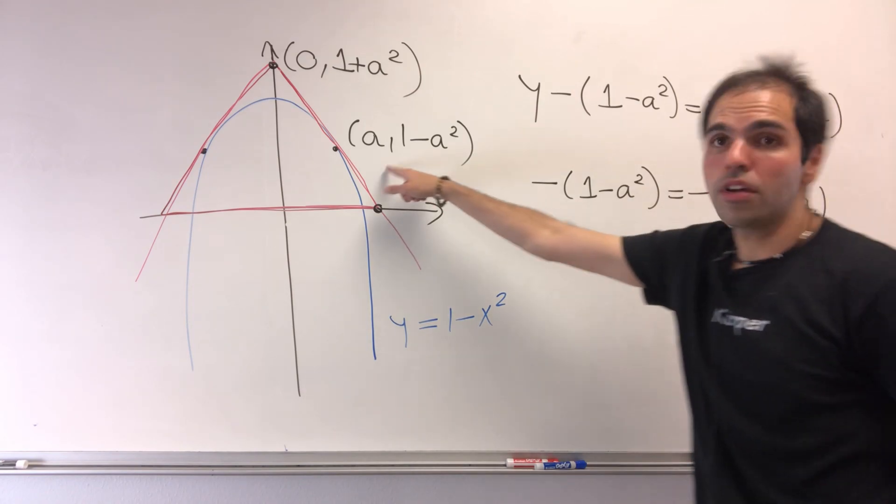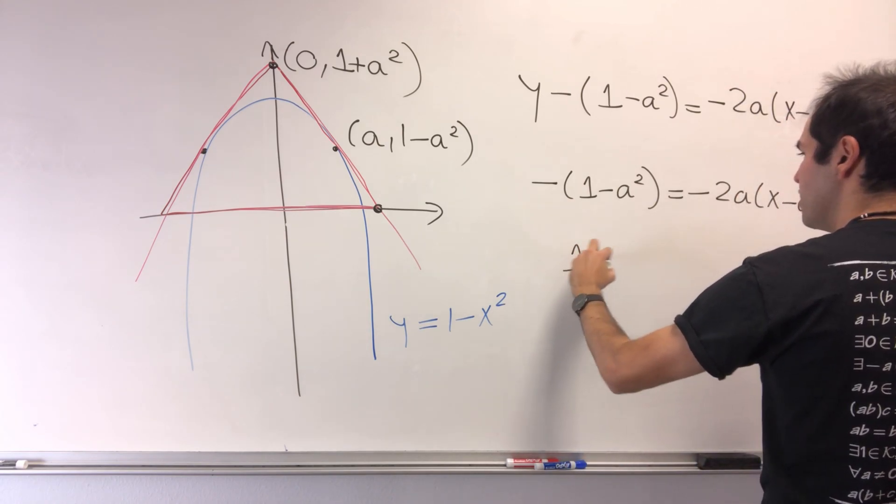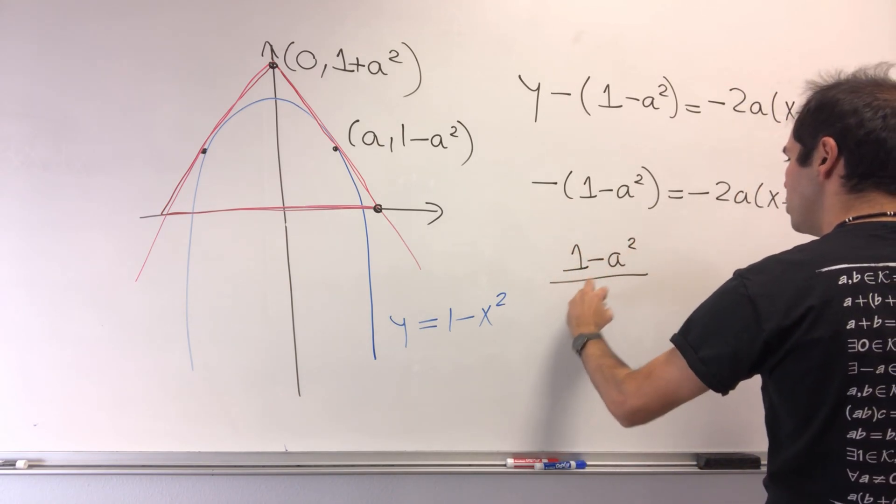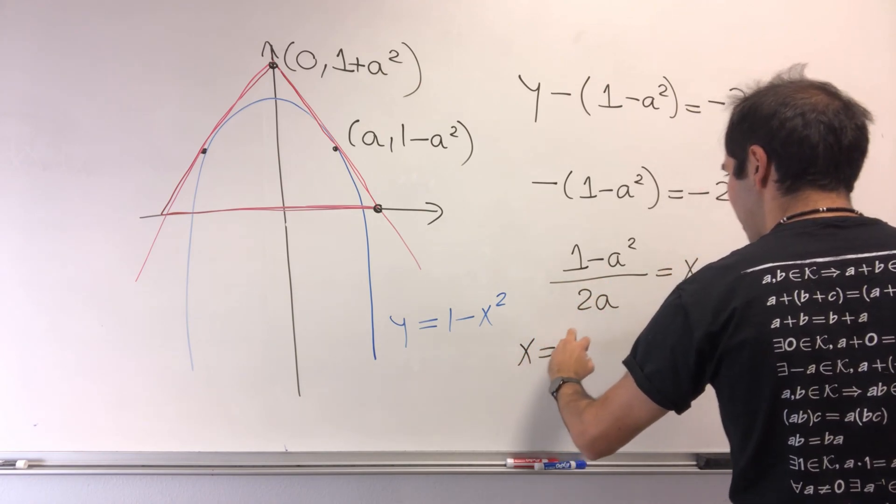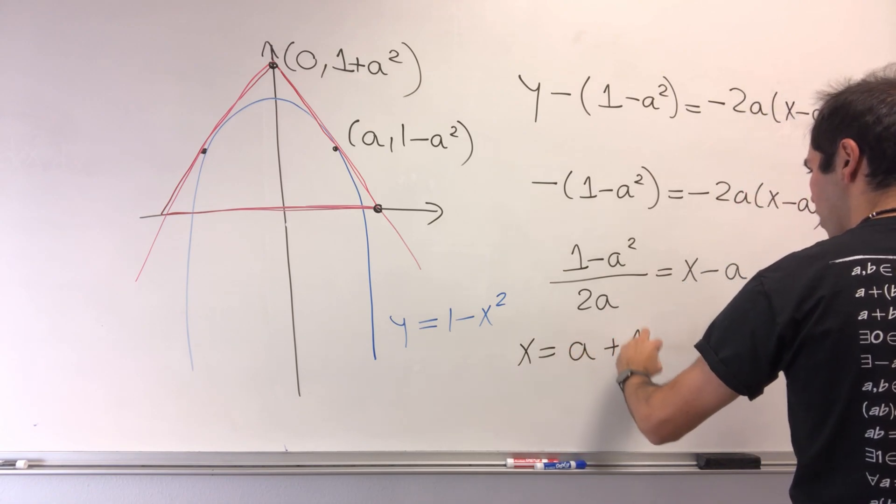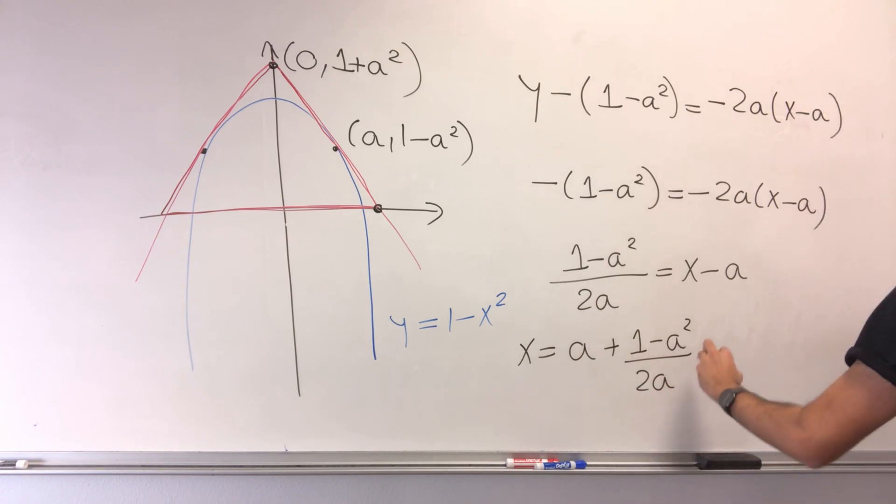So minus (1 minus a squared) equals minus 2a times (x minus a). Well, a is not 0 here. So what we get is (1 minus a squared) over 2a equals x minus a. So x is a plus (1 minus a squared) over 2a, which becomes 2a squared plus 1 minus a squared over 2a. And this just simplifies to 1 plus a squared over 2a.